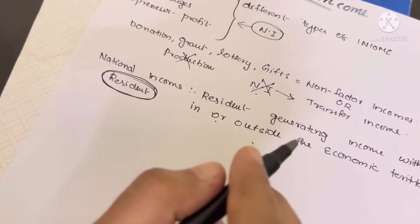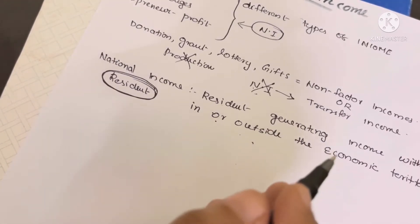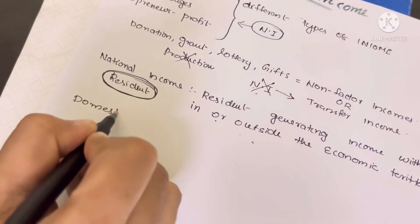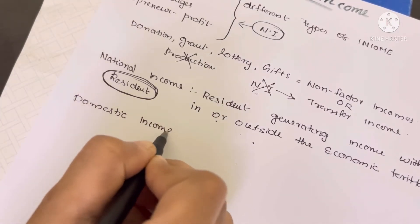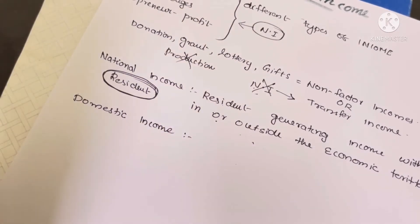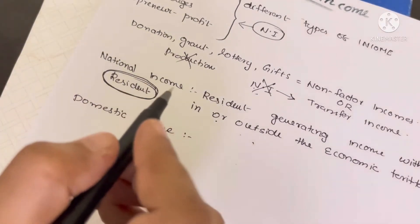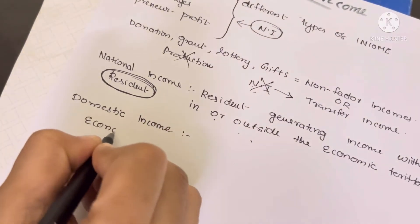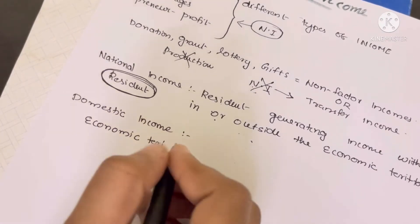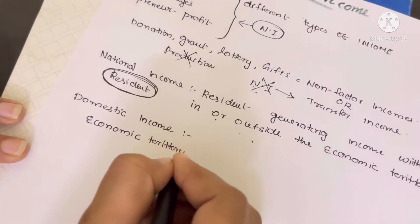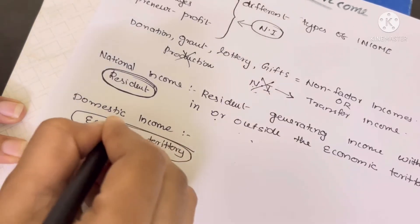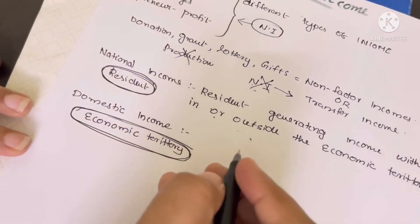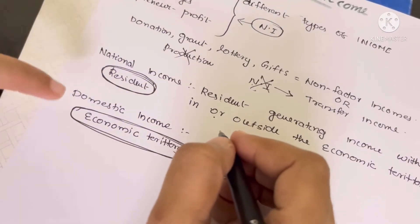The value of goods and services produced by a country during a financial year. The first income is domestic income. Domestic income refers to India — it is the economic territory income.